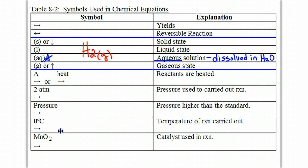And then sometimes you'll see a compound written above the arrow which is known as a catalyst. Catalysts are used to speed up a reaction. And you literally see it above the arrow.